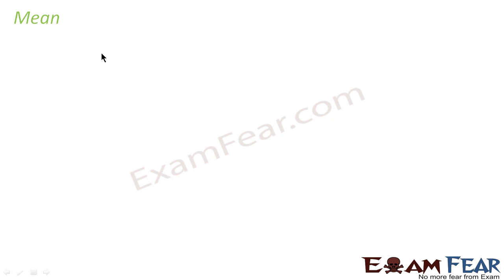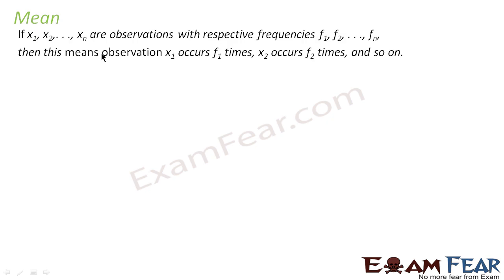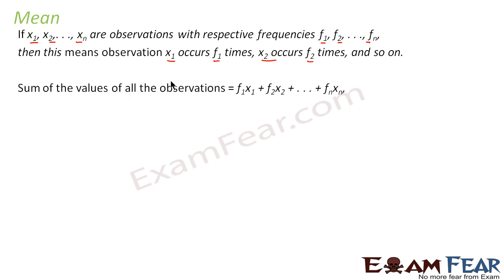To understand mean of grouped data, we first need to understand what mean is mathematically and what grouped data is. Mathematically, if x1, x2, x3, ..., xn are n observations with frequencies f1, f2, f3, ..., fn, then the mean is computed using these frequencies. For instance, if x1 occurs f1 times and x2 occurs f2 times, then the sum of values of all observations is f1·x1 + f2·x2, and so on.